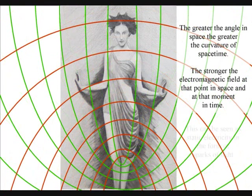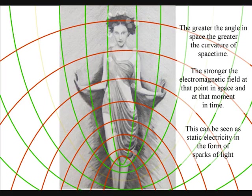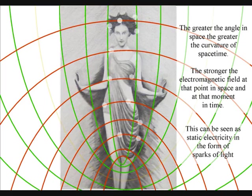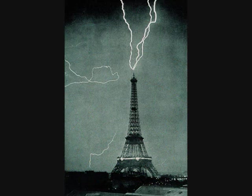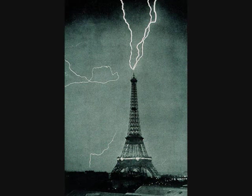This can be seen as sparks of light, associated with static electricity. The atoms will even distort the geometry of space-time, creating electrostatic discharge, in the form of lightning.